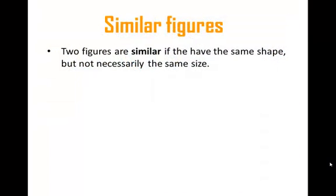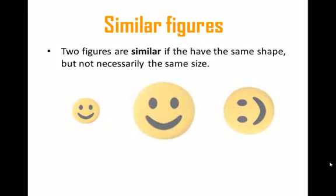We say that two geometric figures are similar if they have the same shape, but not necessarily the same size. So for example, these three happy faces would be similar. Each one of them is a slightly scaled up version of another one.